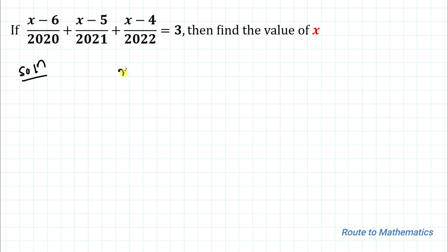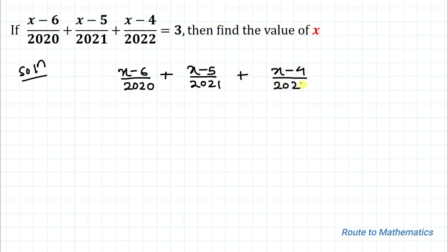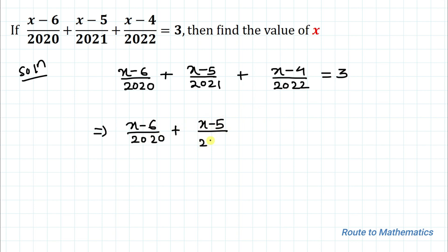The given equation is (x minus 6) divided by 2020, plus (x minus 5) divided by 2021, plus (x minus 4) divided by 2022, equals 3. In the next step, let's take this 3 to the left-hand side, so we have the full expression minus 3 equals 0.